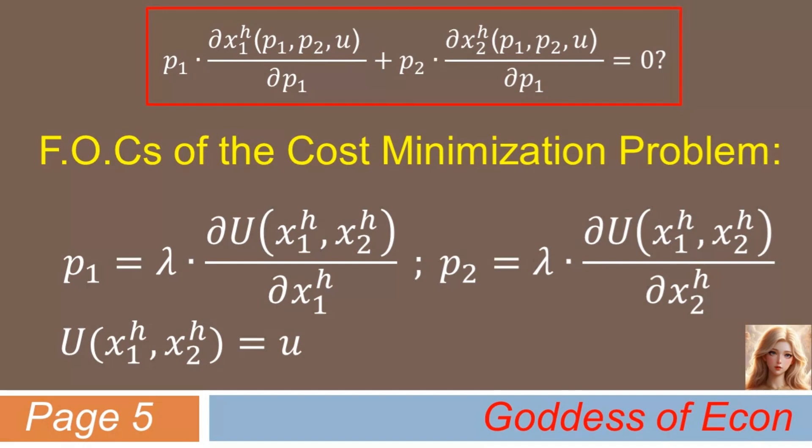Please note that X1 and X2 have been replaced with Hicksian demands, as these are the conditions that should hold at the optimum. And please note that lambda here is the Lagrange multiplier. With these first order conditions, what can we do? Well, we can try to replace P1 and P2 in the equation on the top of the slide with lambda times derivative of U with respect to Hicksian demand for good one and lambda times derivative of U with respect to Hicksian demand for good two, respectively, following the first order conditions. So, are you guys ready? Okay, let's begin our journey.